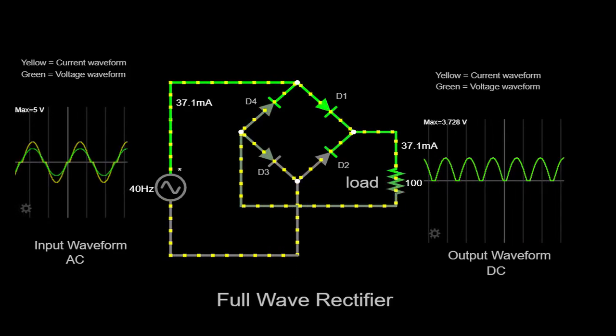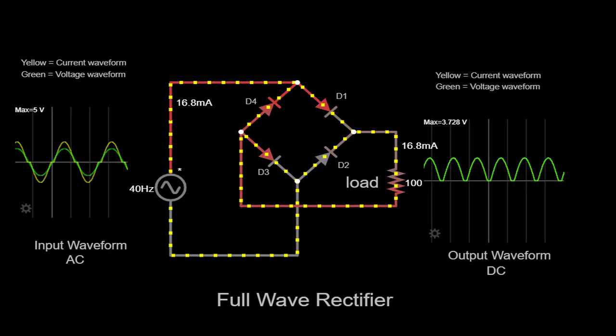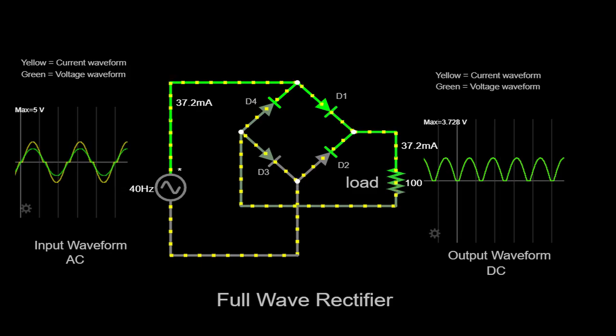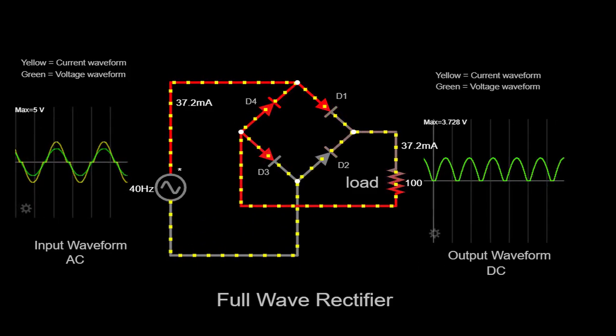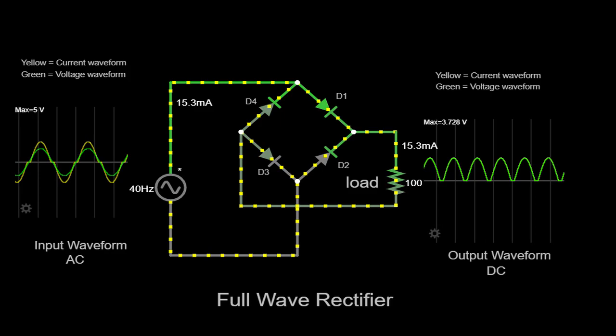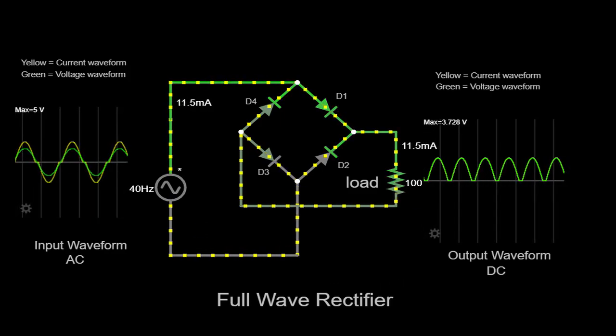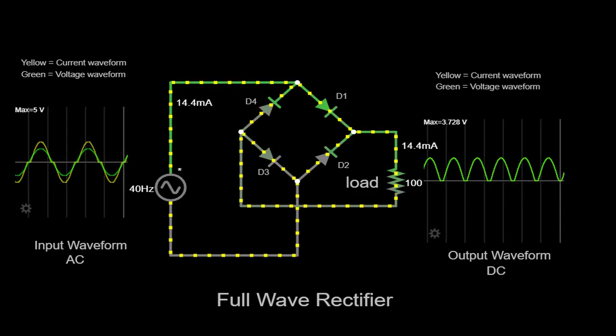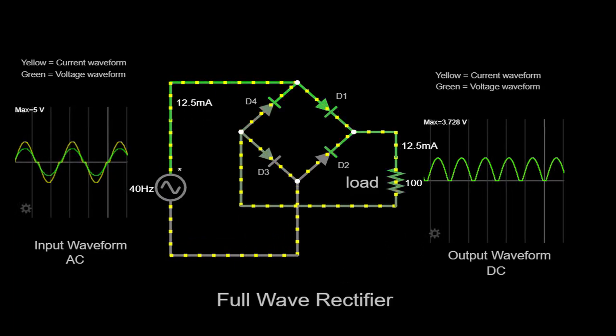Let's carefully observe the waveforms displayed on the scope. The top trace on the scope represents the input voltage from the AC power supply, while the bottom trace represents the output voltage across the load resistor. By comparing the two, we can clearly see the conversion from AC to DC as the output waveform exhibits a continuous, positive voltage.